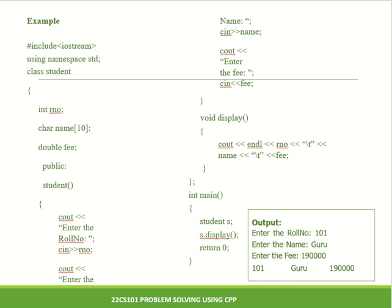For example, entering roll number 1 (not zero), name guru, and fee 19 — these values are received from the user and the output is printed as: 1 tab guru, then one tab one lakh ninety thousand.